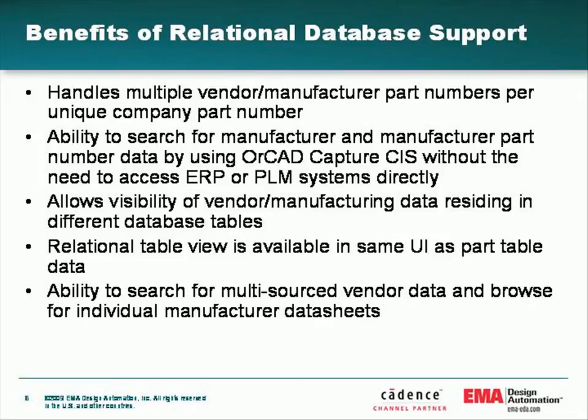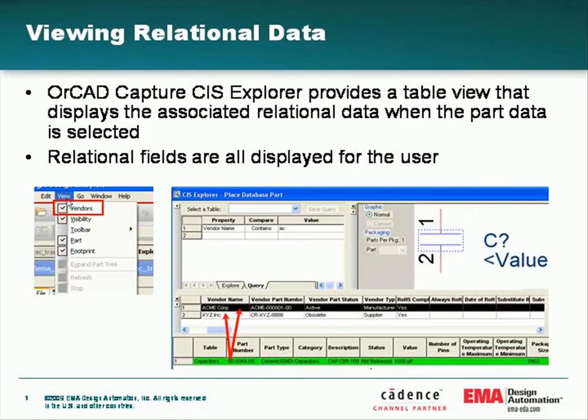A relational query makes selection of any relational database field a method to find any associated part. Other benefits include the ability to search for multi-source vendor part information and browse for datasheet hyperlinks directly from the relational table view. ORCAD Capture CIS Explorer provides a table view that displays the associated relational data when the part data is selected, and how the relational field data is set up in the database determines how relational fields are displayed.